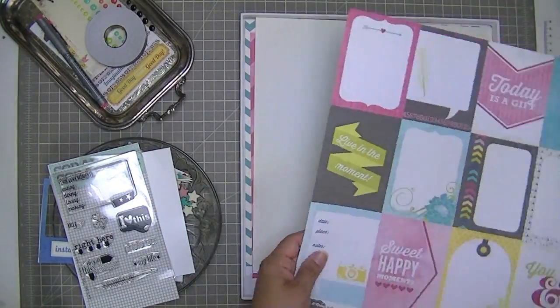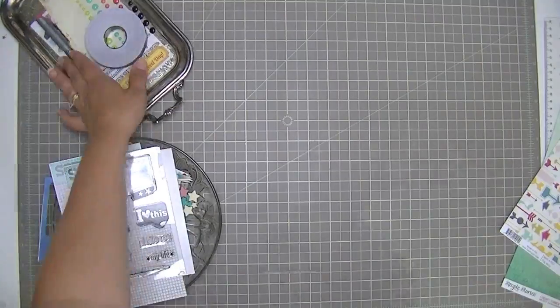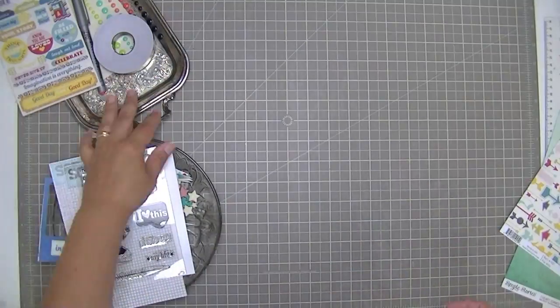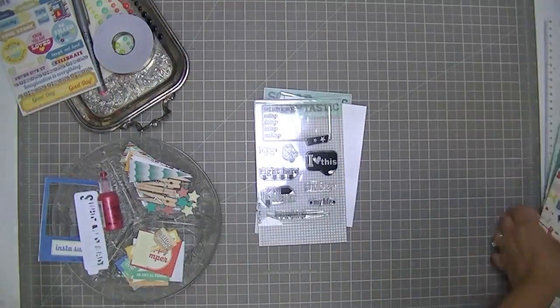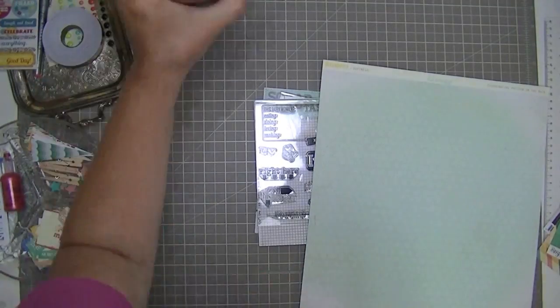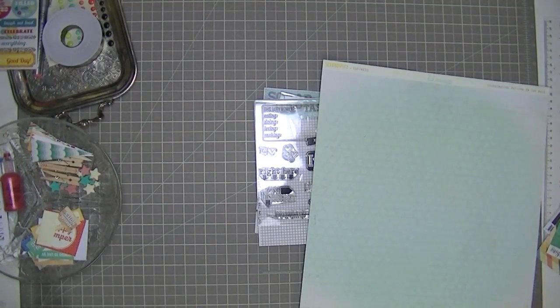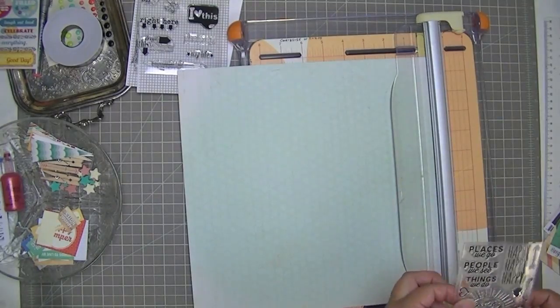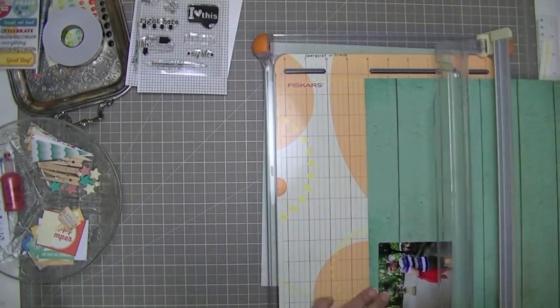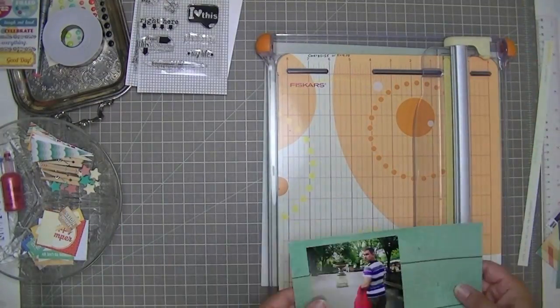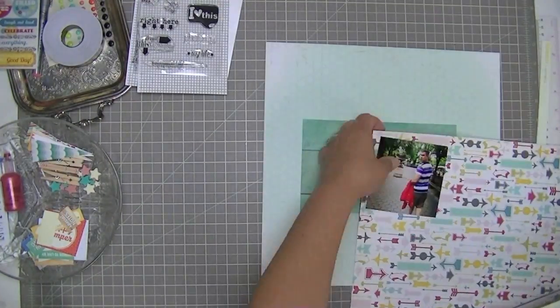And that arrow paper really kind of speaks to me here. So I pulled that out and that's the only thing I'm going to use from the other kit. So most of this is from the Rock Lobster kit. This is Heidi Swapp paper and it is gorgeous. I had no idea. I hadn't seen the Serendipity collection before and I had no idea how nice it was.